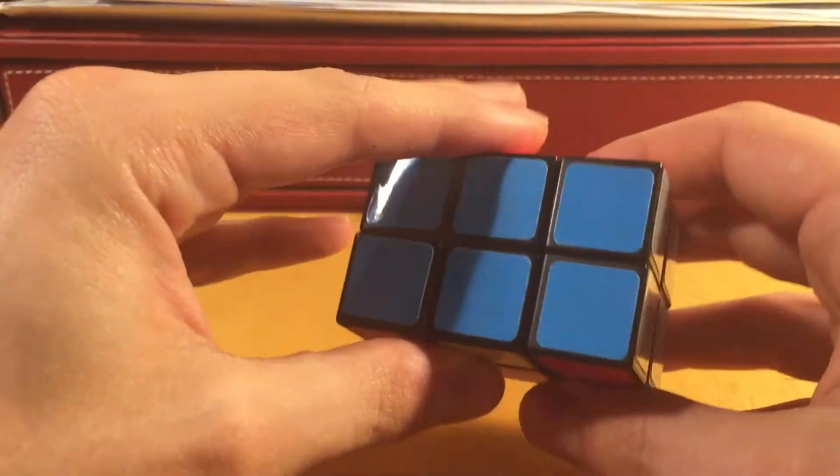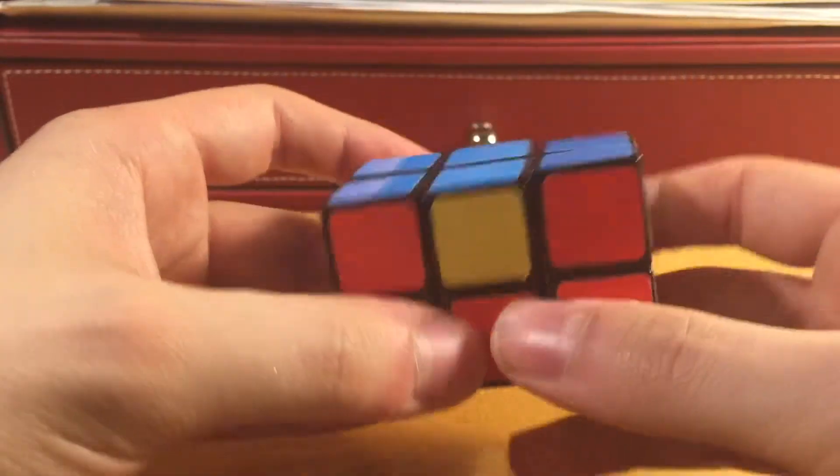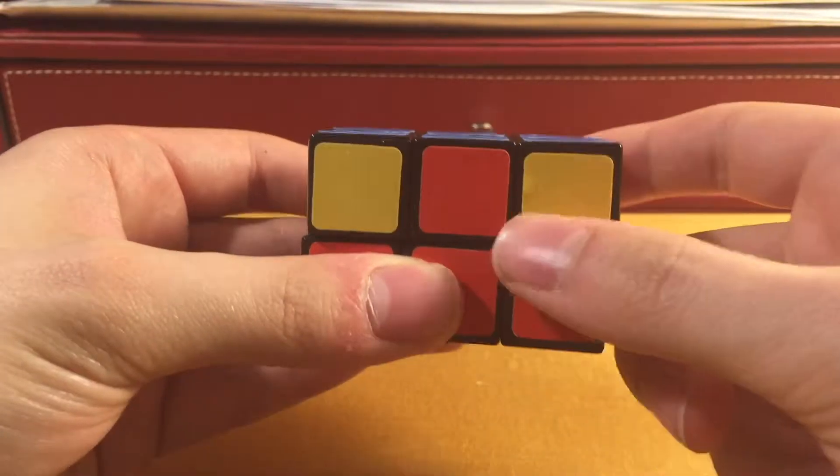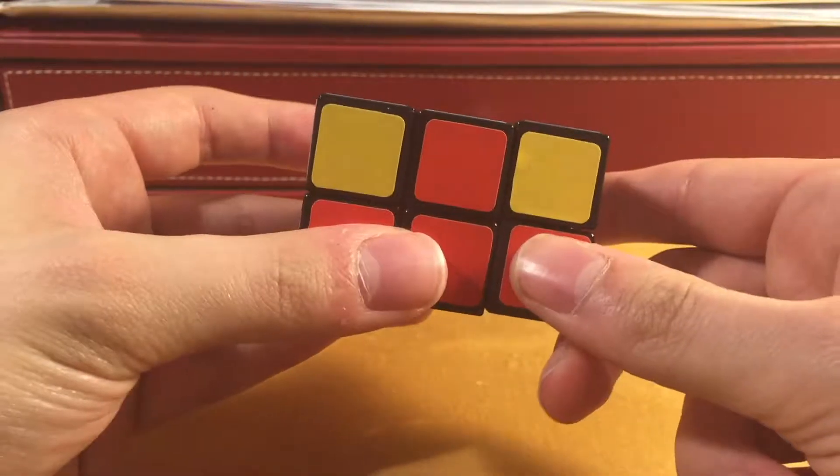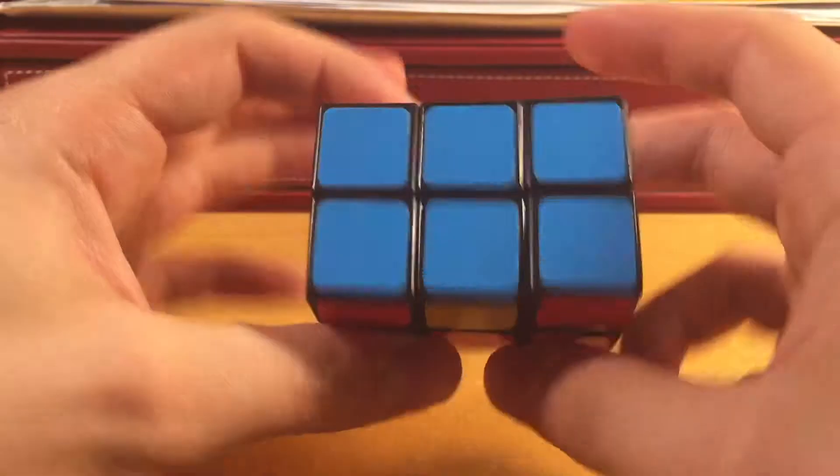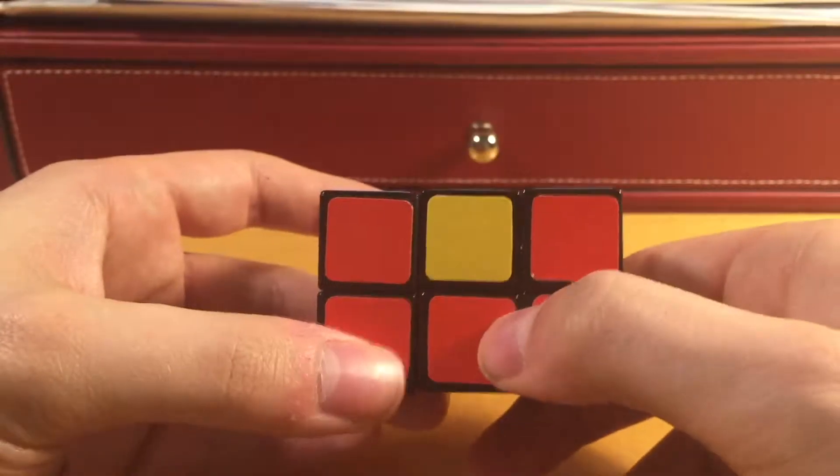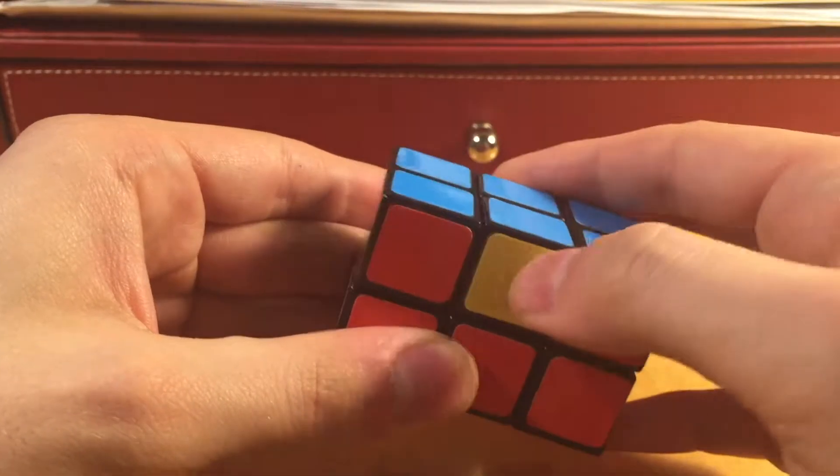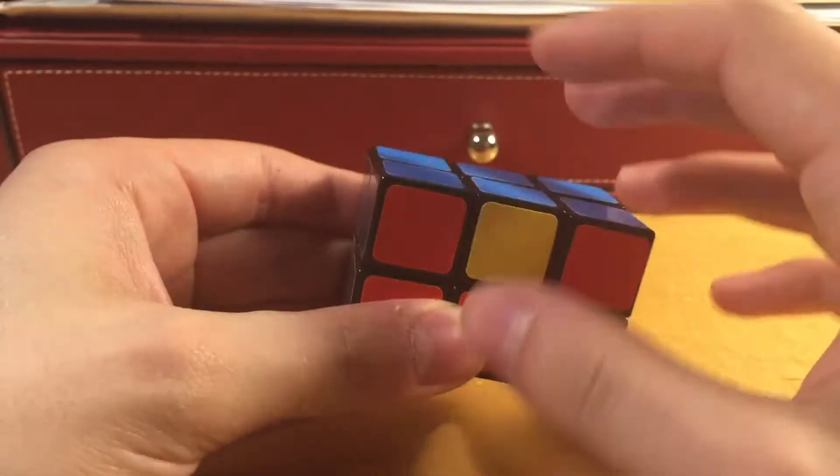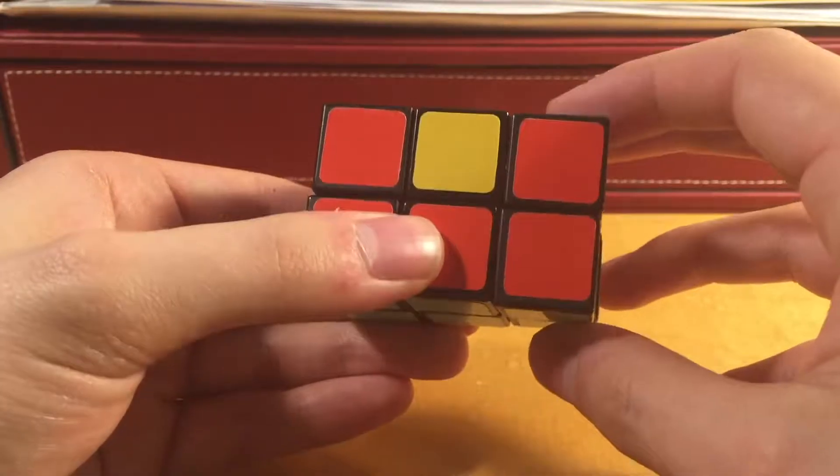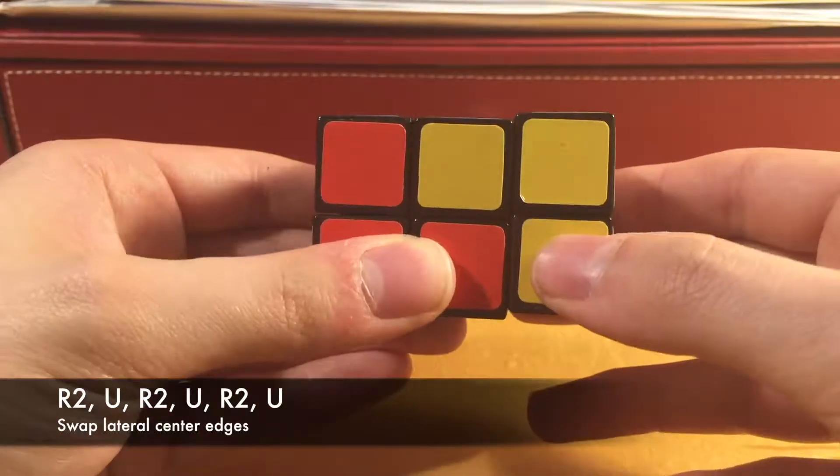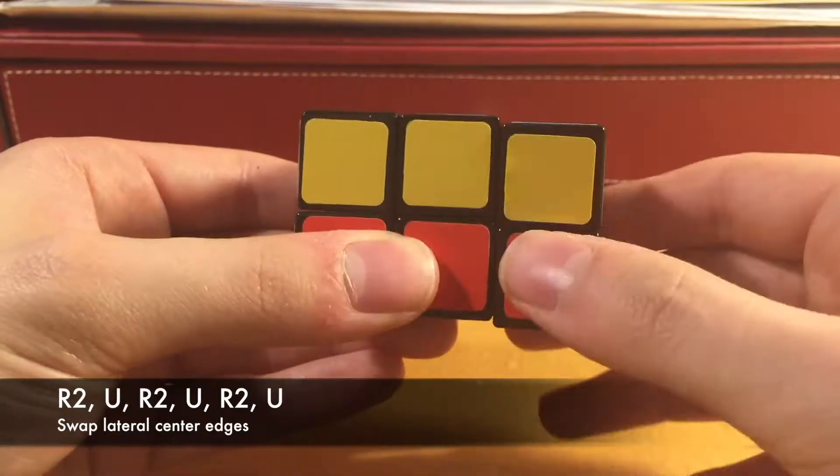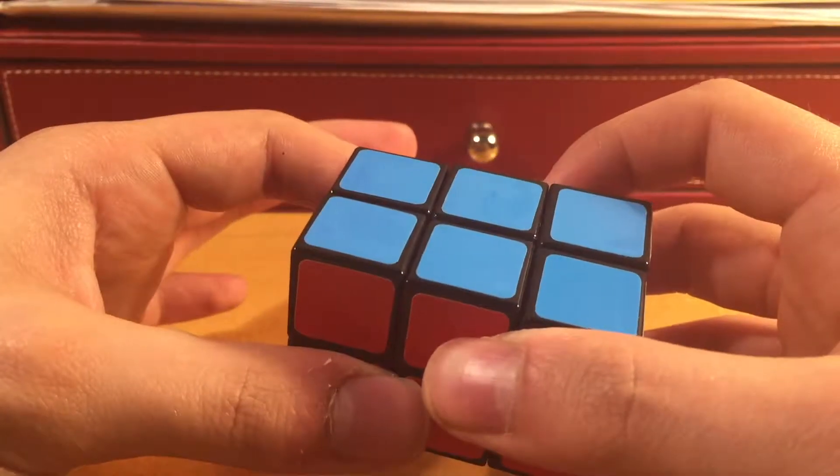This is the second case where you're going to have to solve the middle layer. And these two edges simply need to be swapped, just like that. But obviously, you can't do that because that ruins the corners that you just solved. So, you're going to want to hold the puzzle horizontally this time. And now, this is going to be referred to as the R face, and this is going to be referred to as the U face. So, this following algorithm is going to be R2, U, R2, U, R2, U. And that solves those two edges.